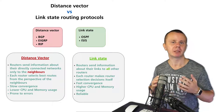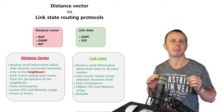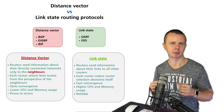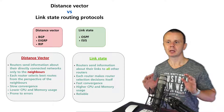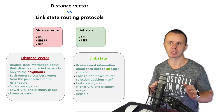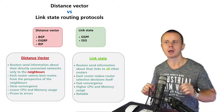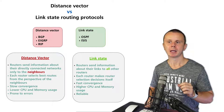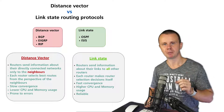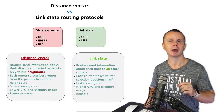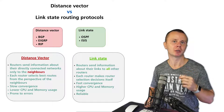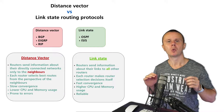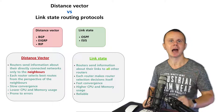To summarize: the most popular link state routing protocol is OSPF — an IGP protocol — and the most popular distance vector protocol is BGP — an EGP protocol used to exchange routing information between autonomous systems. In the next lecture, we will discuss which networks are blocked in BGP.